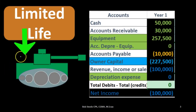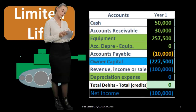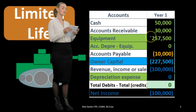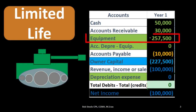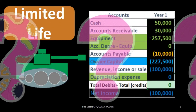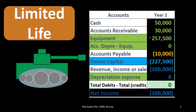For example, our property, plant, and equipment in this example is a tank, and that's going to help us to generate revenue in some way in the future. Therefore we will put that on the books as property, plant, and equipment. The cost of the tank is $257,500, and we need to determine how much that tank will go down by in accordance with the limited life.